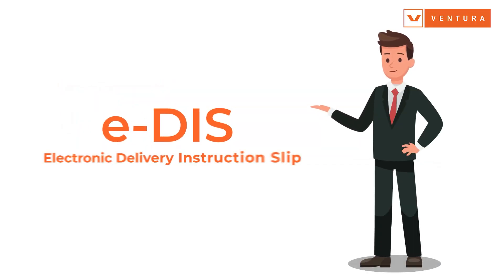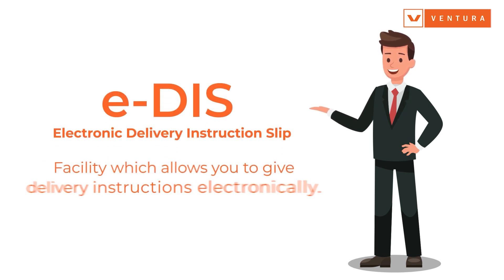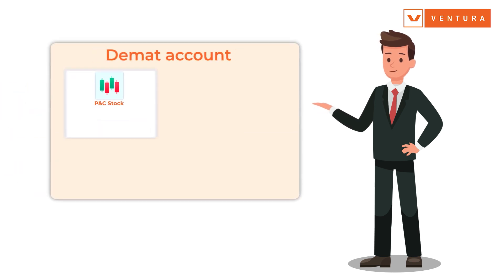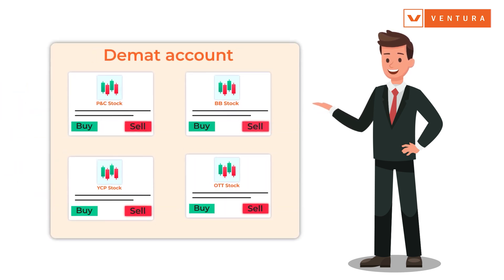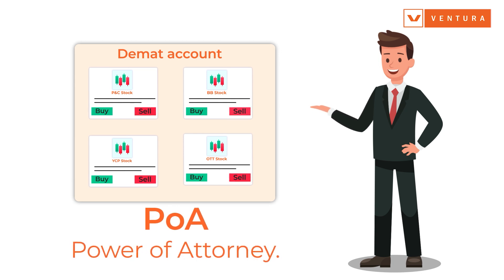EDIS, or Electronic Delivery Instruction Slip, is a facility which allows you to give delivery instructions electronically so that you can sell shares in your DMAT account even if you have not submitted your POA, i.e., power of attorney.